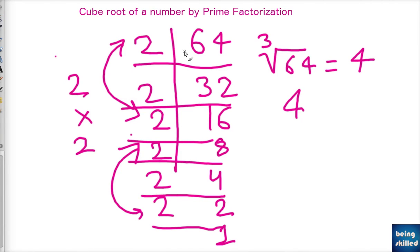So always keep in mind that whenever you are calculating square root, then it will be in pairs of 2. The factors will be in pairs of 2s. And when you are calculating cube root, then the factors will be in the group of 3.